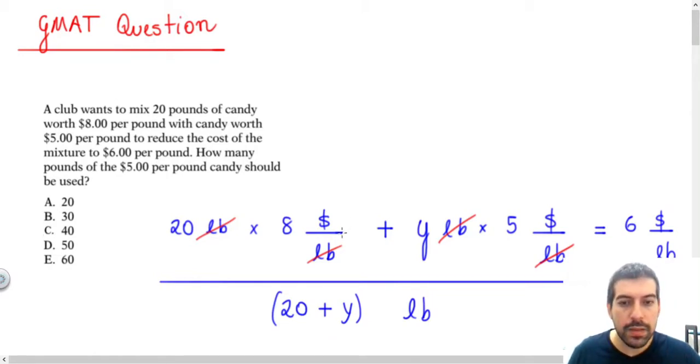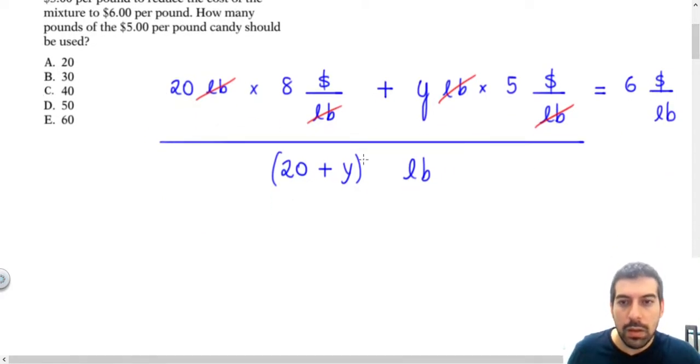Now the left side also has, as the unity, dollars per pound. So everything is in the right way now. Let's do the calculus to finish the question.